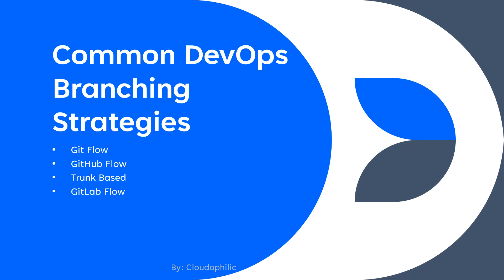Common DevOps branching strategies — starting with Git Flow. In Git Flow we have primary branches and support branches. In primary branches we have the master branch and the dev branch. The master branch is the primary branch where all the production code is stored; all final releases happen from this branch. The dev branch is where all the actual development happens and all the supporting branches get merged here.